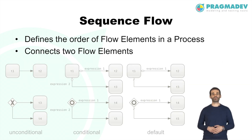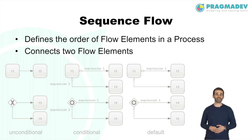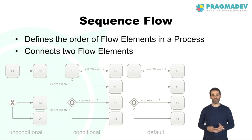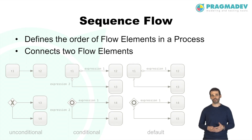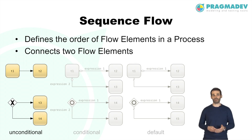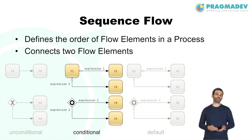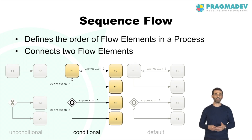A sequence flow is used to show the order of flow elements in a process. Each sequence flow has only one source and only one target; the source and target must be events, activities, or gateways. A sequence flow is a solid line with an arrowhead, also called an unconditional sequence flow. A sequence flow can optionally define a condition expression, indicating that the flow will be taken if the expression evaluates to true.